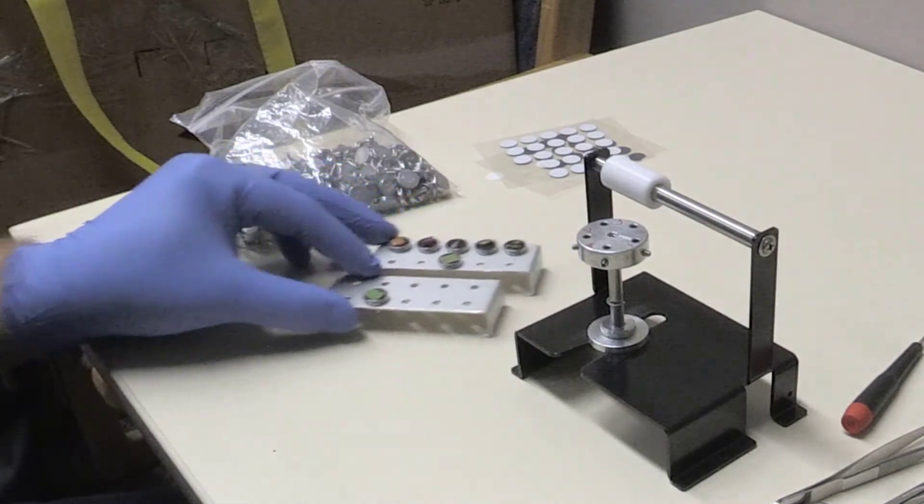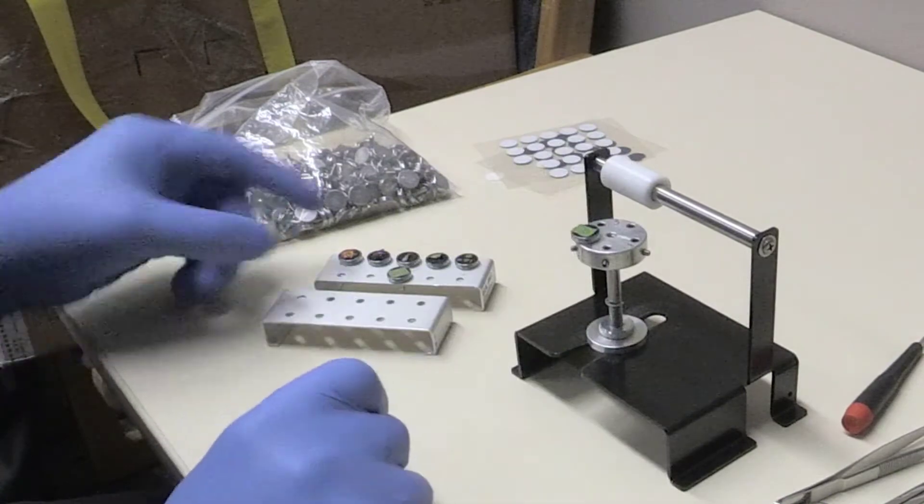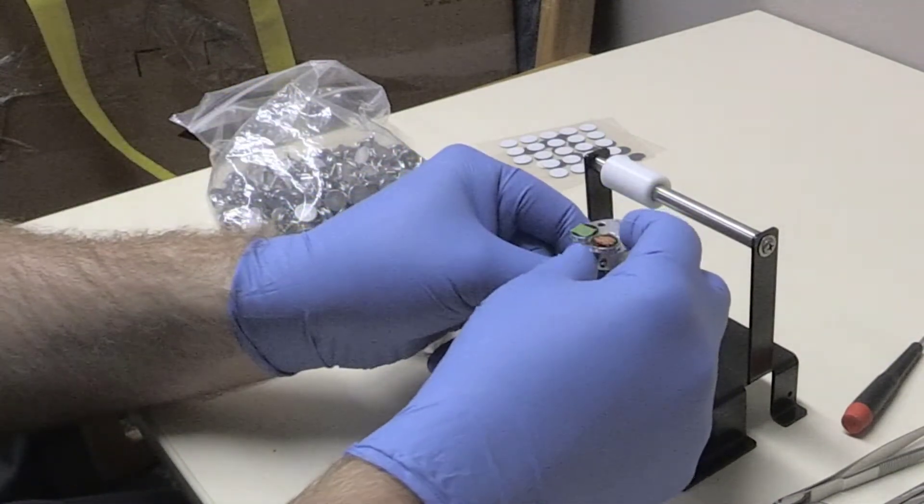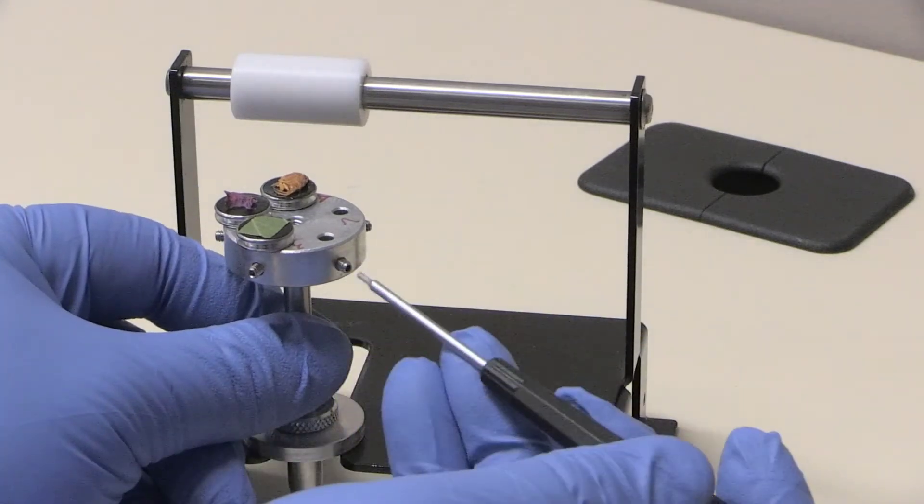When all of your specimens have been prepared, add up to five pins into the specimen stub. Secure the mounting pins to the stage by turning the small side screws gently.